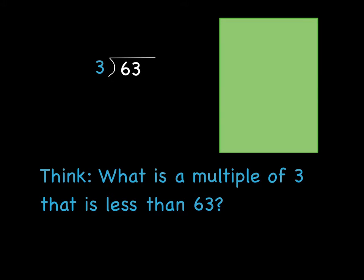The first thing you're going to think is, what is a multiple of my divisor, which in this case is 3, that is less than my dividend, which in this case is 63. And just try to think of some easy ones.